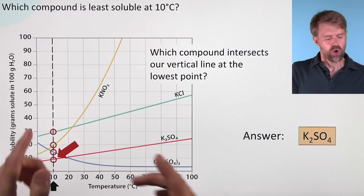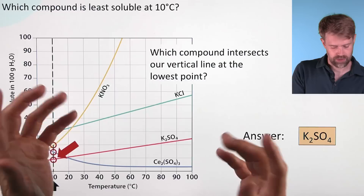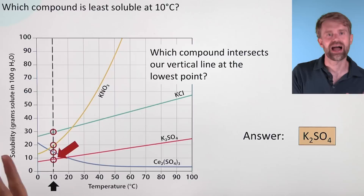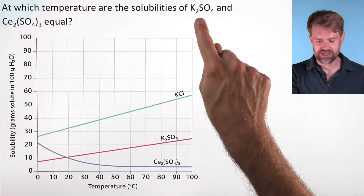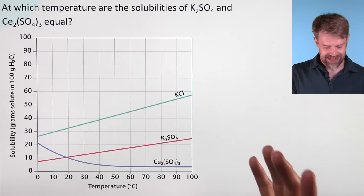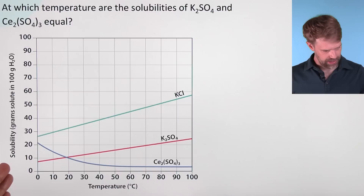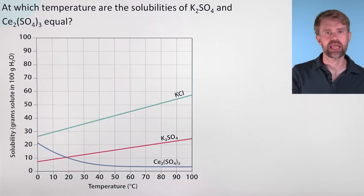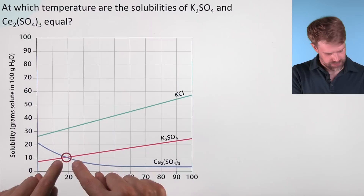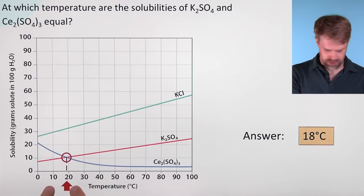When you're doing problems like this, make sure you're paying attention to the specific line — it can get a little bit tricky to keep them separate. Make sure that the chemical you find is associated with the line you're looking at. At which temperature are the solubilities of K2SO4 and Ce2(SO4)3 equal? We're looking for where these two have equal solubilities. Since solubility is plotted on the y-axis, we want to find the point where these two lines have the same y-value — in other words, where they intersect. Going straight down to the x-axis, let's say it's about 18 degrees where they have the same solubility.